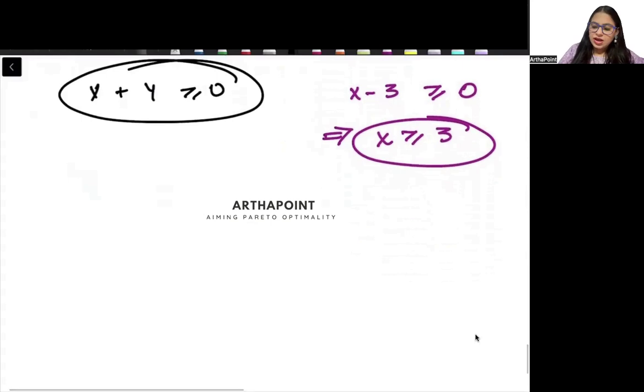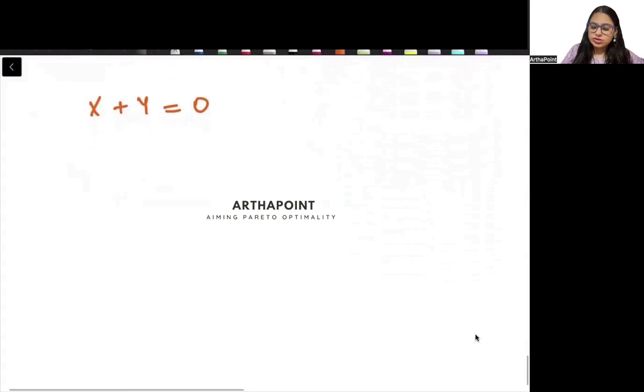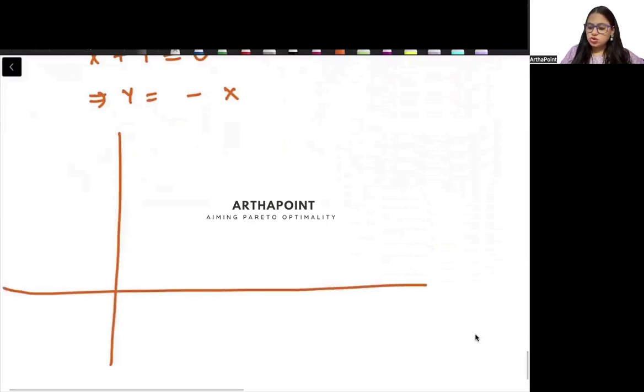Tell me something. If I have to plot x plus y is equal to 0, how will I plot this? We get y is equal to minus x. So if I just go ahead and I plot this thing. If x is 1, y will be minus 1. When x is 2, y will be minus 2. Isn't it? You understand?